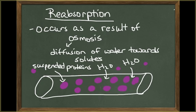Reabsorption is another process that moves materials across the capillary walls. Reabsorption occurs as a result of osmosis. Osmosis is the diffusion of water across a selectively permeable membrane where water moves from high water concentration to low water concentration, or water moves from low solute concentration to high solute concentration. In other words, water diffuses towards the solution containing the higher solute concentration.